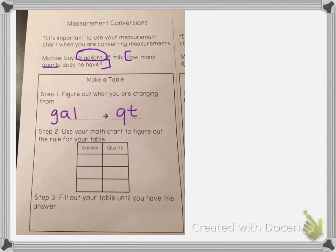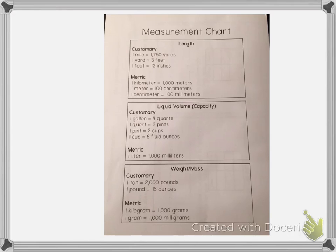Step two is to use our math chart to figure out the rule for the table. If we look at our math chart, we have to find gallons and quarts. I want to look under liquid volume or capacity, and I see that one gallon equals four quarts.